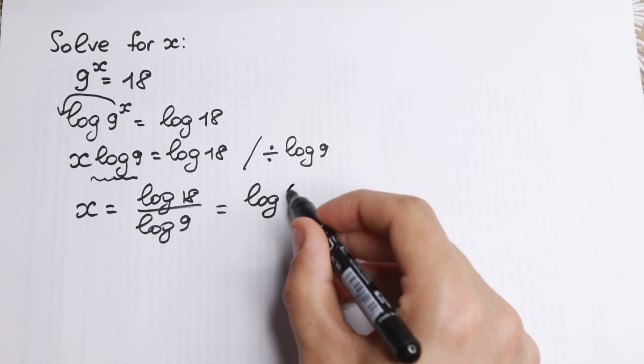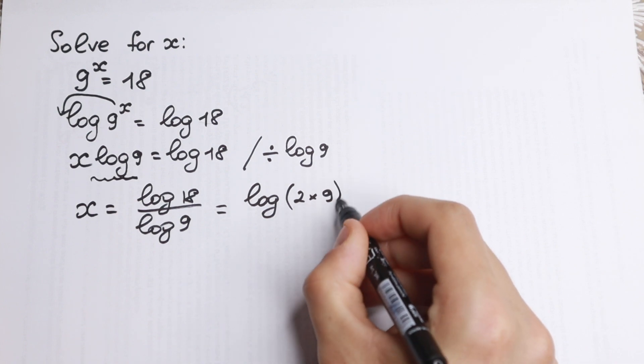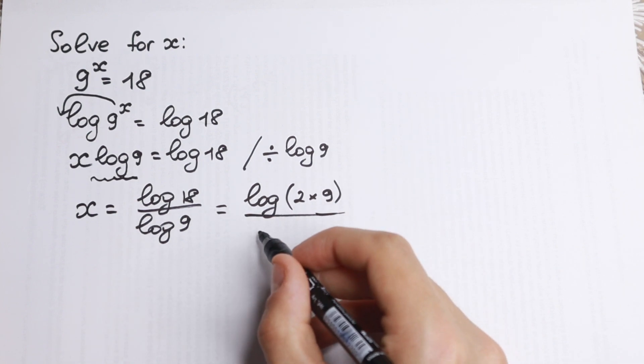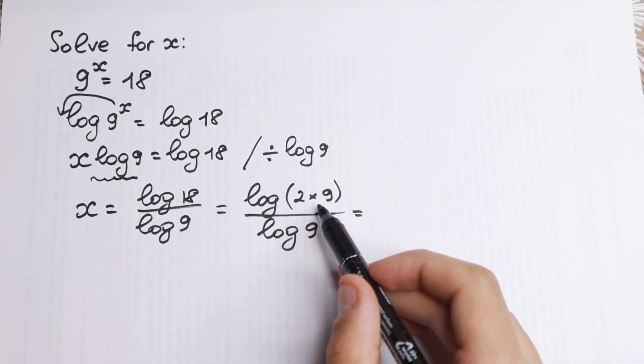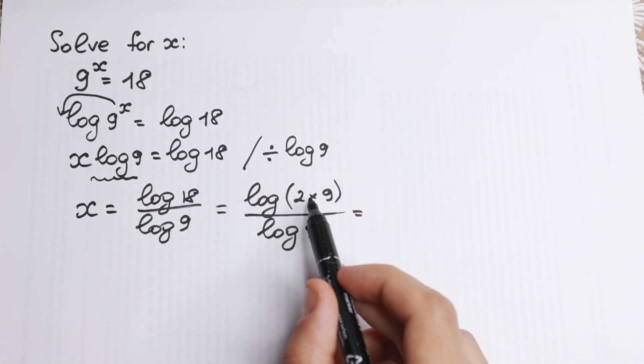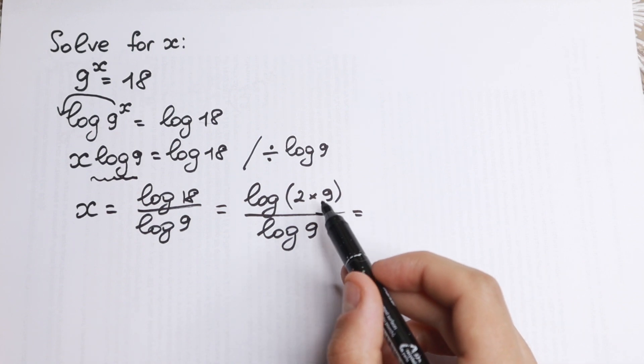So log, we can write it as 2 times 9, over log 9. And we all know that if we have multiplication, if we have a log of a product, we can write it as the sum of 2 logs.